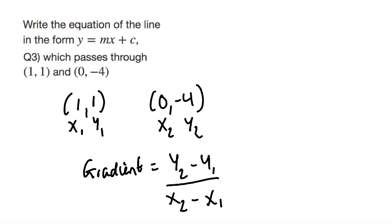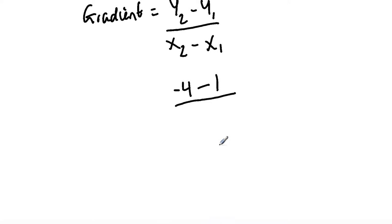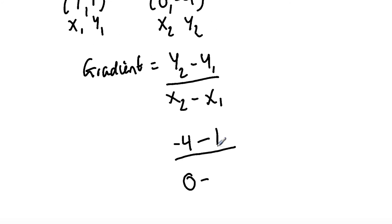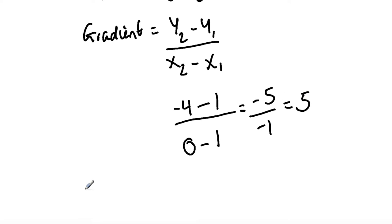I'm then going to substitute these values into the equation to work out the gradient. So y2 is -4, minus y1 which is 1, over x2 which is 0, minus x1 which is 1. Simplifying: -4 minus 1 is -5, and 0 minus 1 is -1. So -5 divided by -1 is 5. Therefore the gradient is 5.